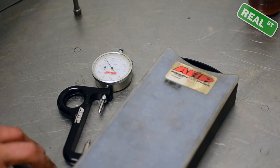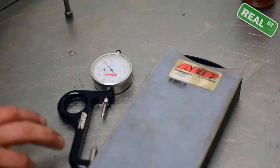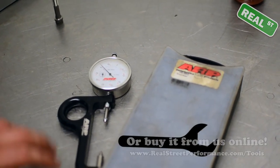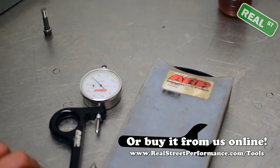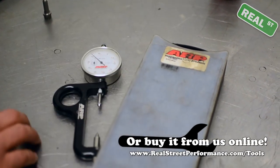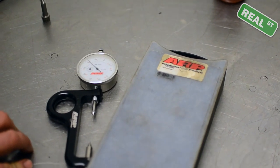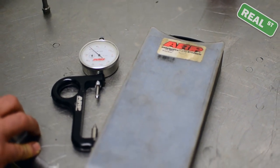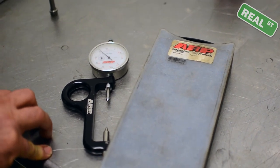This is an ARP bolt stretch gauge. We sell it here at Real Street, so you can call one of our sales guys and put an order in if you want to add this to your arsenal of tools. It helps remove any inaccuracy that your torque wrench may have because you're basically giving yourself a way to double-check your math.